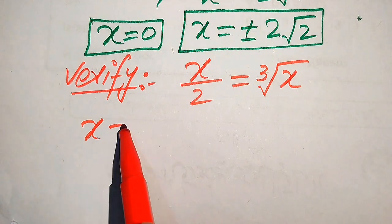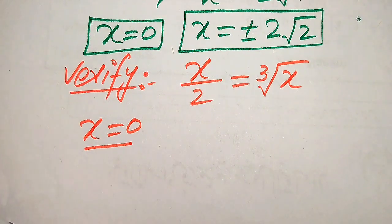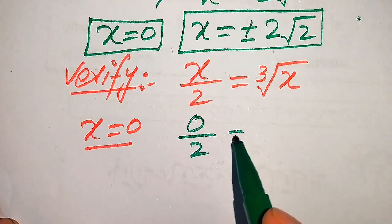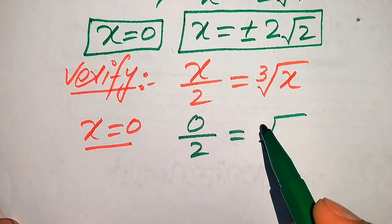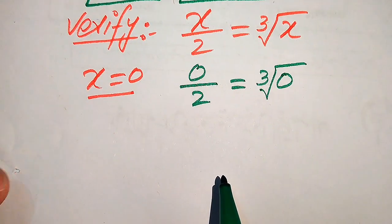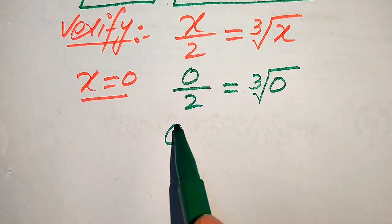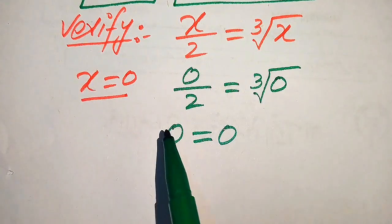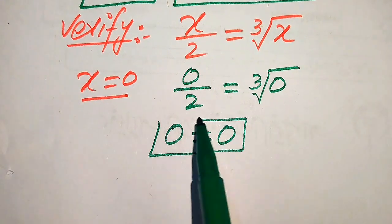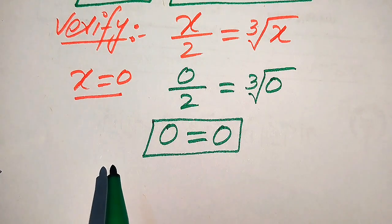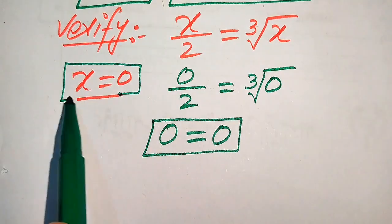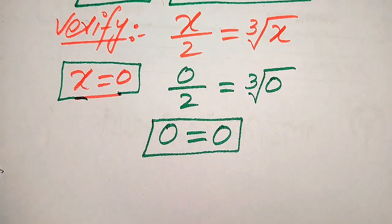First we verify x equals 0. We put x equals 0 on both sides: 0 over 2 equals cube root of 0. Then 0 over 2 becomes 0, and cube root of 0 is 0. So left hand side equals right hand side, which shows that x equals 0 is a solution of the given equation.